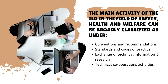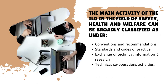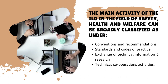The main activities of the ILO in safety, health and welfare can be broadly classified as: first, conventions and recommendations; second, standards and codes of practice; third, exchange of technical information and research; and fourth, technical cooperation activities.